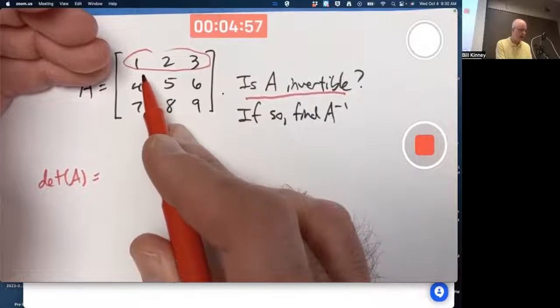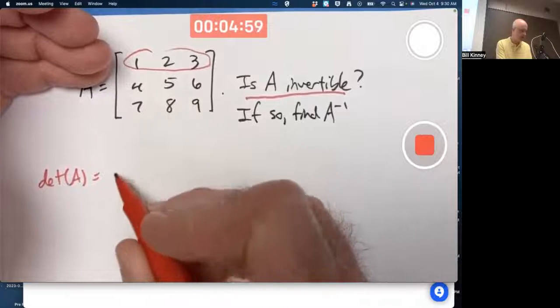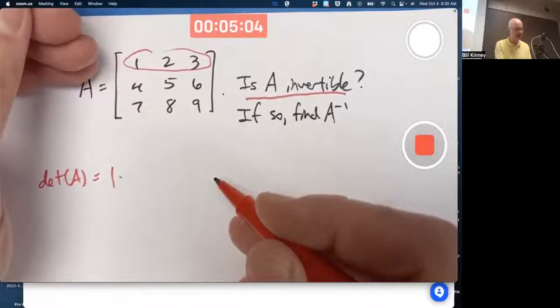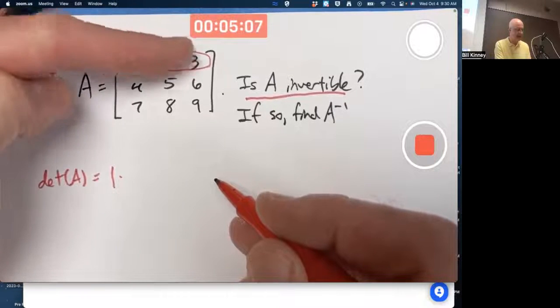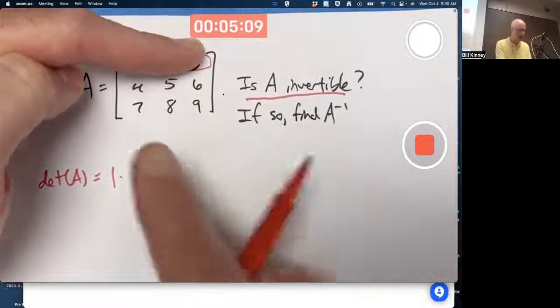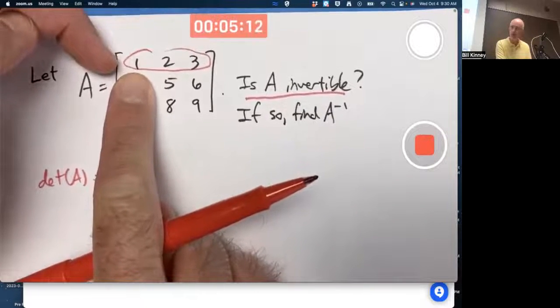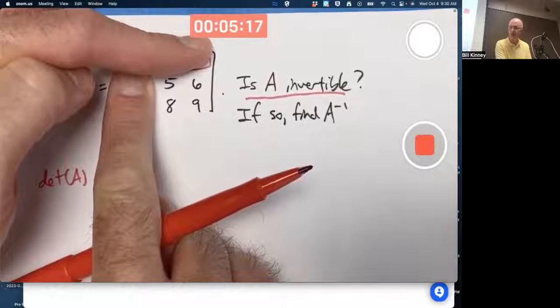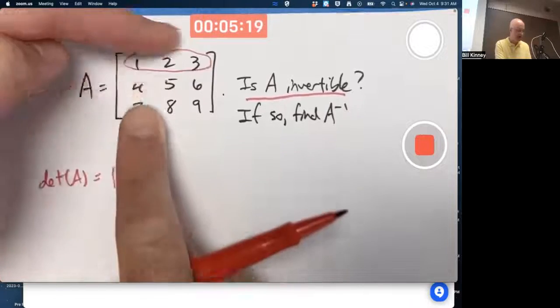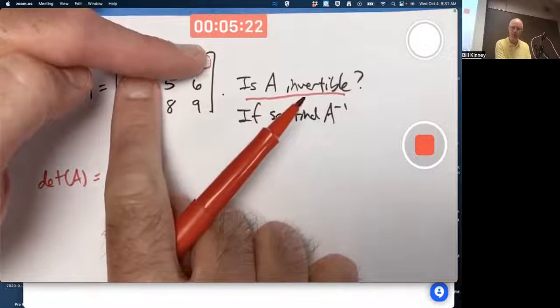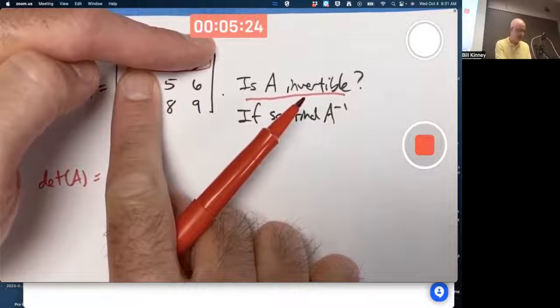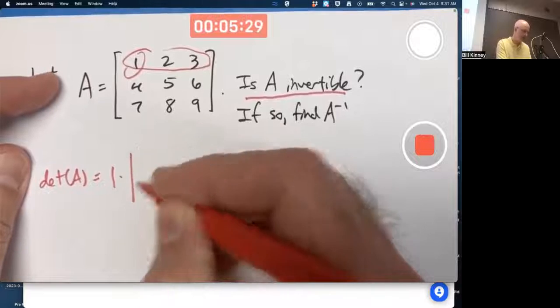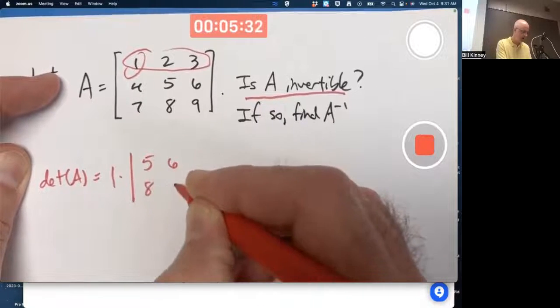If you've got zeros in the matrix, it's good to choose a row or column that's got the most zeros to do your cofactor expansion about because it reduces the amount of work you have to do. But in this case, we don't have any zeros, so you might as well just pick the first row.